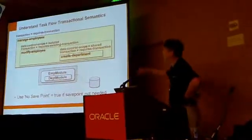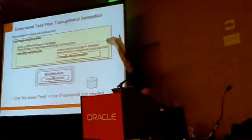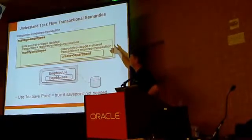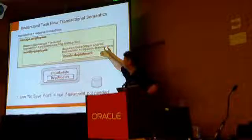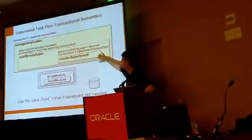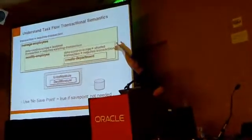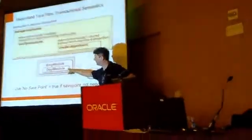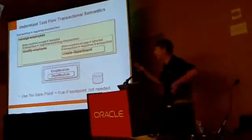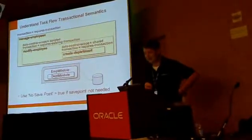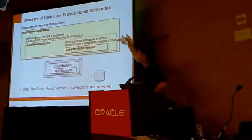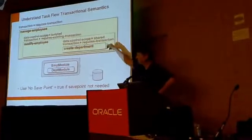Another interesting scenario: a task flow called Manage Employees calls Modify Employees, and while editing an employee you need to create a new department, so you call a third task flow called Create Department. If you use shared data control scope along with required transactions, the app module used by the new task flow gets nested automatically inside the existing app module, so you still have only one database connection. That nesting happens automatically by the framework whenever shared data control scope and shared transaction are both set.